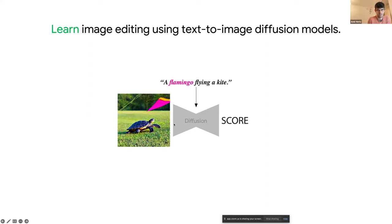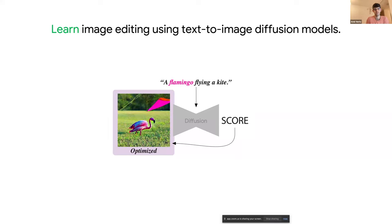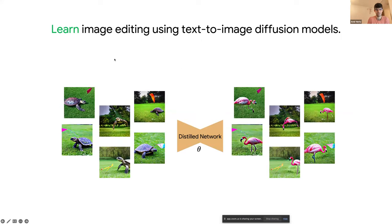In this example, we want to change a turtle to a flamingo. We get a score for the alignment between the text and the image, and we use this score to update the image until we get the flamingo. If we have this kind of score function, we can also use it to train a new model — for example, we have a collection of images of turtles and we train a distilled network using the DDS score function until it generates good flamingo images.